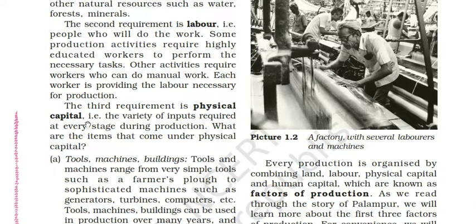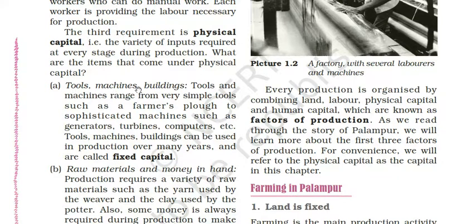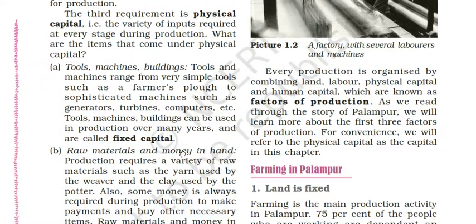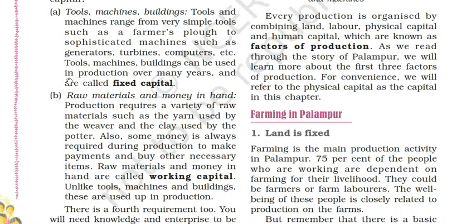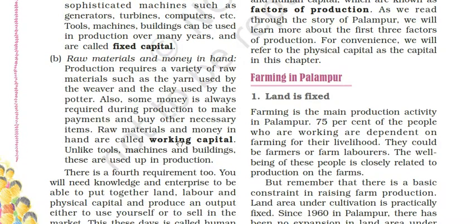The third requirement is physical capital, the variety of inputs required at every stage during production. Physical capital includes: A) tools, machines, and buildings - ranging from simple tools like a farmer's plough to sophisticated machines like generators, turbines, and computers. Tools, machines and buildings can be used over many years and are called fixed capital. B) Raw materials and money in hand - such as the yarn used by the weaver and the clay used by the potter. Some money is always required during production to make payments. Raw materials and money in hand are called working capital, and unlike fixed capital, these are used up in production.